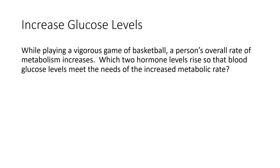The question says: while playing a vigorous game of basketball, a person's overall rate of metabolism increases. We talked about thyroid stimulating hormone having an impact on metabolic rate, so make a little note there. The question asks: which two hormone levels rise so that blood glucose levels will meet the needs of the increased metabolic rate? So they're asking for two hormones that increase glucose levels.